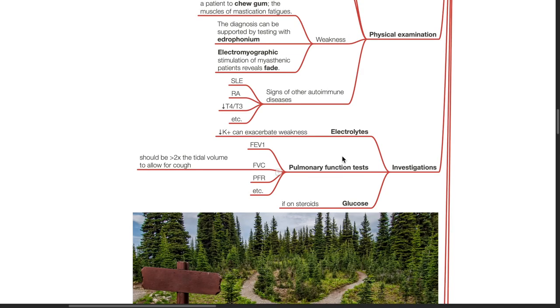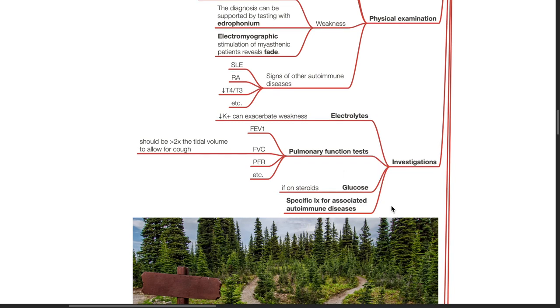Important investigations include serum electrolytes, hypokalemia can exacerbate weakness, pulmonary function tests such as FEV1, FVC, and PFR. FVC should be more than 2 times the tidal volume to allow for cough. Assess glucose levels if the patient is on steroids and other specific investigations for associated autoimmune diseases.